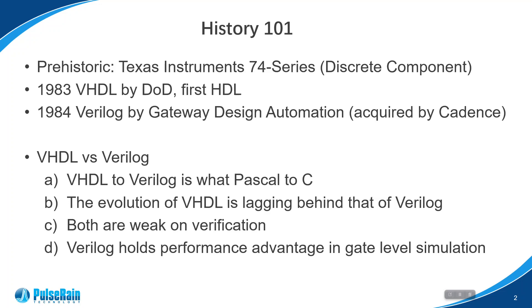VHDL was developed in 1983 under the funding of the Department of Defense. It was such a big deal at that time, and VHDL was put in export control initially. As of today, a lot of US defense companies still use VHDL due to their DoD legacy. At the same time, Verilog also emerged in the commercial world. Verilog was introduced by a company called Gateway Design Automation in 1984, and this company was later acquired by Cadence. It offers similar design features to VHDL, but in a more concise fashion.